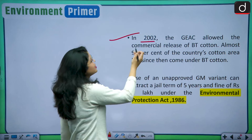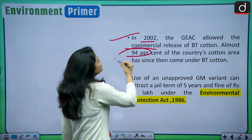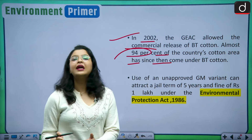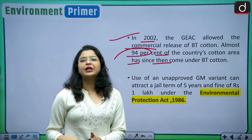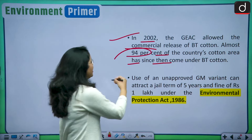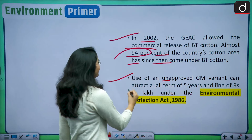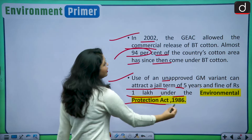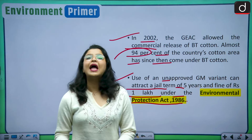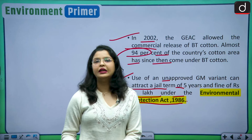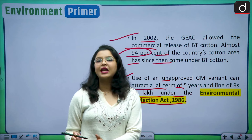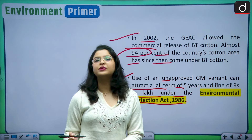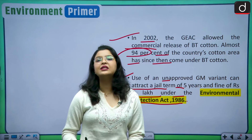In 2002, the GEAC allowed the commercial release of BT cotton, and almost 94% of the country's cotton area has since come under BT cotton due to its advantages of increasing farmer incomes and being disease tolerant. Use of an unapproved GM variant can attract a jail term of five years and a fine of rupees one lakh under the Environmental Protection Act of 1986. You need GEAC approval, and unauthorized use of GM crops will result in imprisonment as well as a fine.